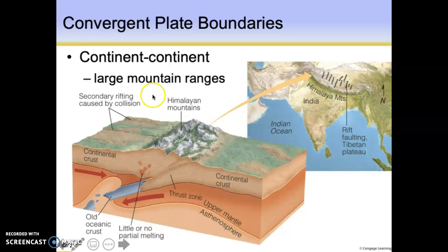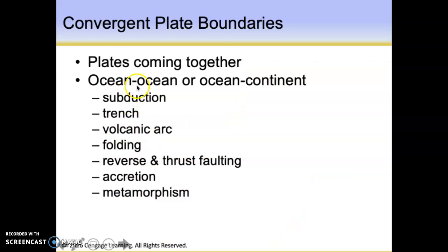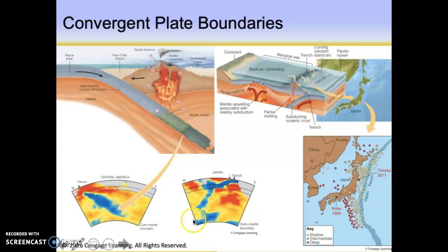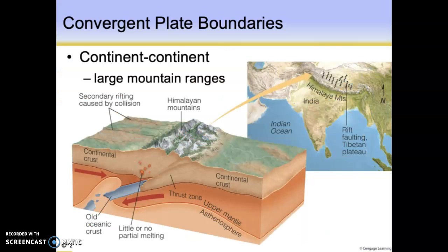In this situation, if we go back to our list, we do not get subduction, we don't get a trench, and we do not get a volcanic arc. But folding, reverse and thrust faulting — those we get — along with accretion, which we'll talk about in a minute, and metamorphism. So three of these last four features are associated with this type of convergent plate boundary.